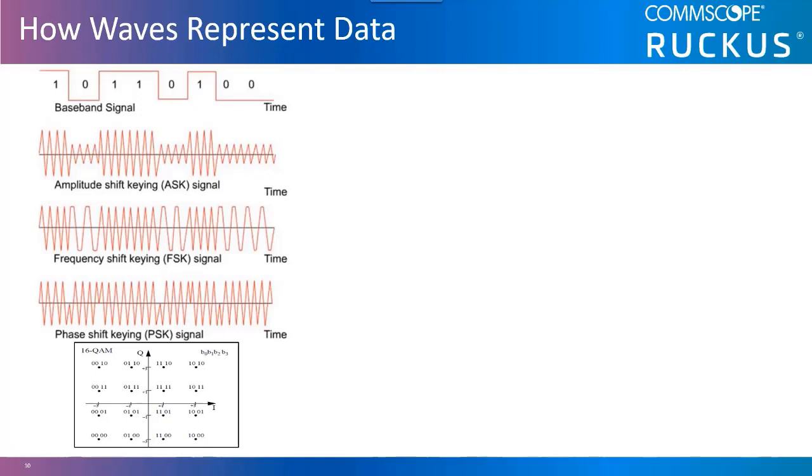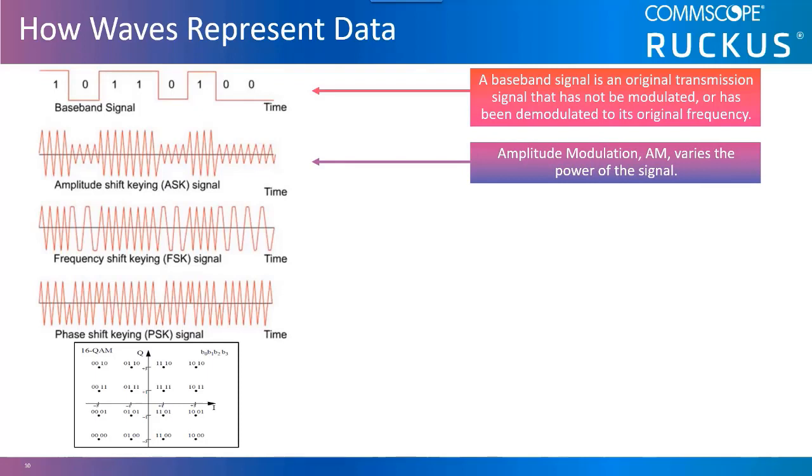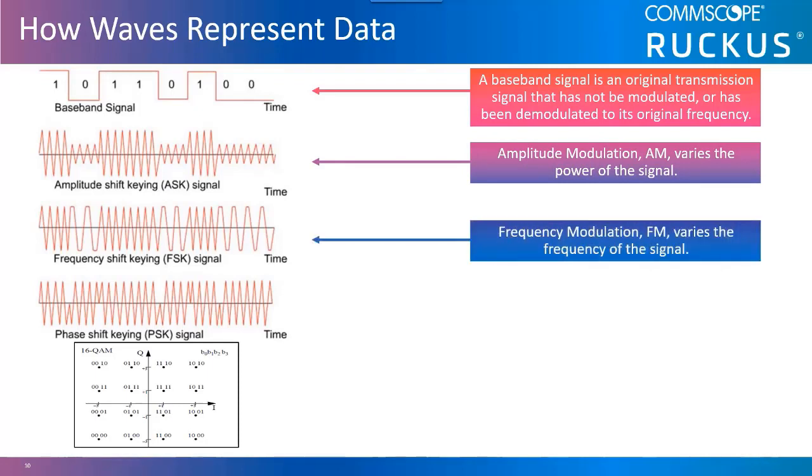Wireless and radio cards use different types of modulation methods to represent data bits as they are delivered via an RF signal based upon the technology in use. A baseband signal is an original transmission signal that has not been modulated or has been demodulated to its original frequency.